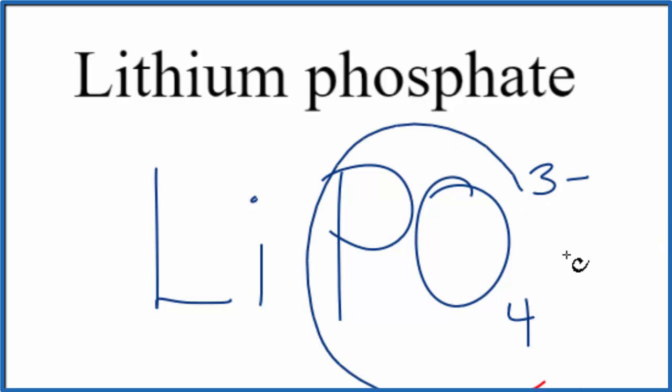So we know the whole phosphate ion here is 3-, we also know that we have a metal and then a group of nonmetals. This is an ionic compound, so the charge, the net charge, has to add up to 0.